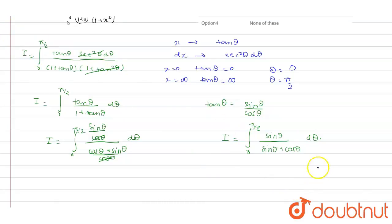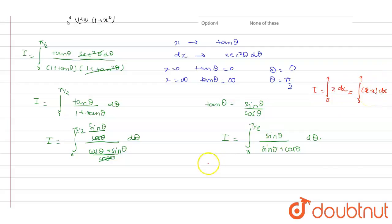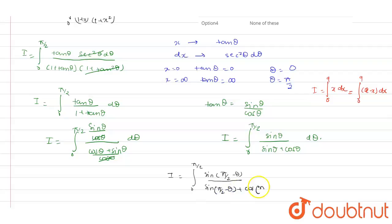Now let us use a property: the integral from 0 to a of f(x) dx equals the integral from 0 to a of f(a minus x) dx. Applying this property here, our integral I becomes integration from 0 to π/2 of sin(π/2 minus θ) upon sin(π/2 minus θ) plus cos(π/2 minus θ) dθ.